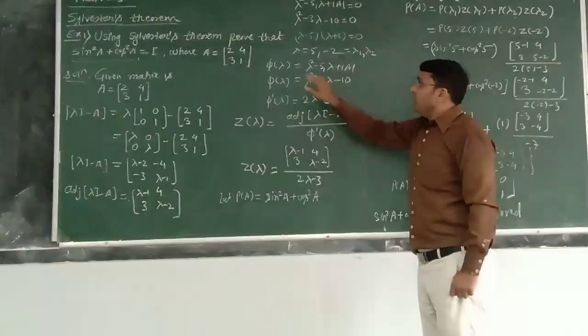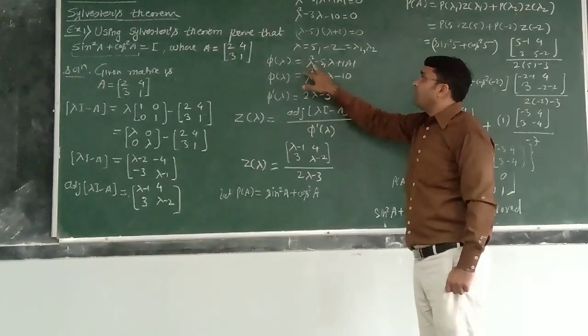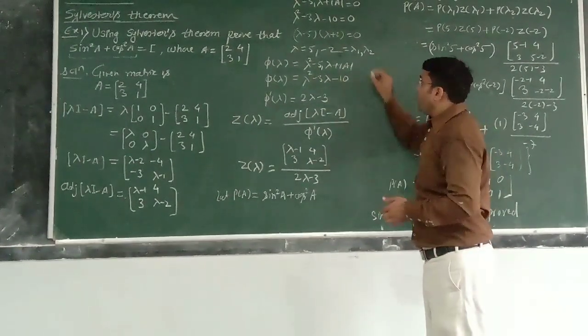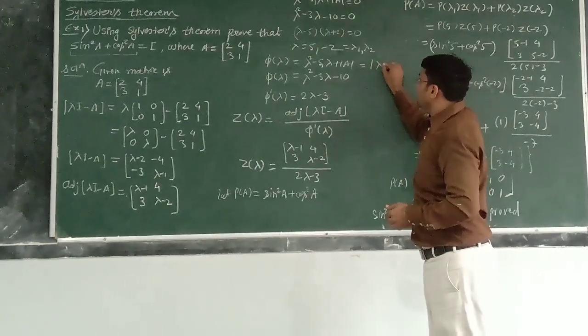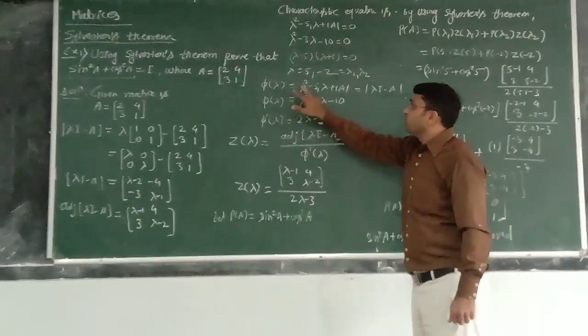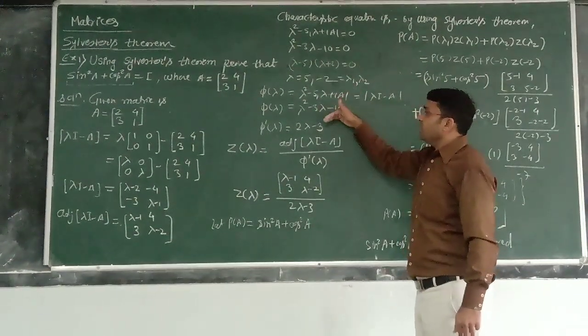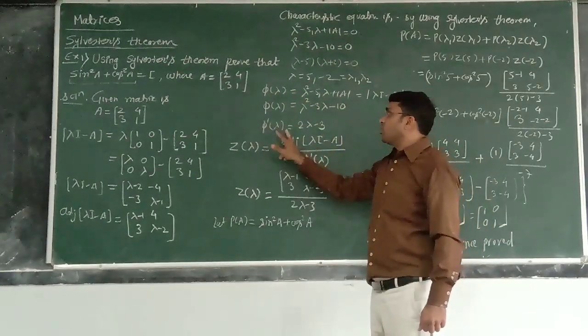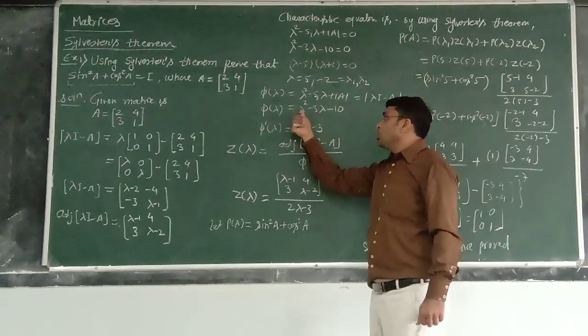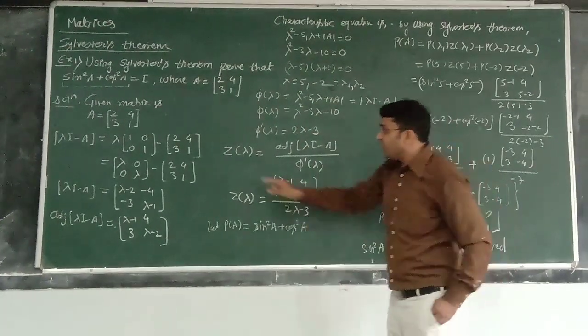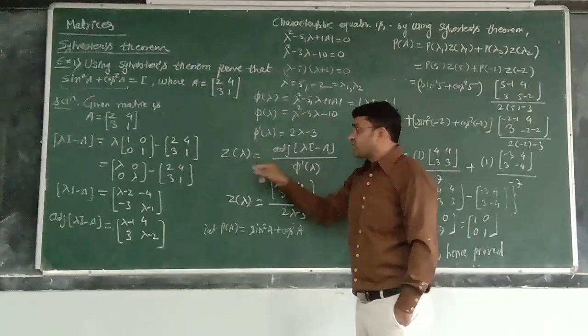Now further, we just define the phi of lambda which is lambda square minus S1 lambda plus determinant of A. Or we can have this as a determinant of lambda I minus A. You will get the same thing. This we have already calculated. Put it here. And we require the derivative of this phi of lambda. So, if we do phi dash of lambda, take a derivative. This is 2 lambda minus 3.